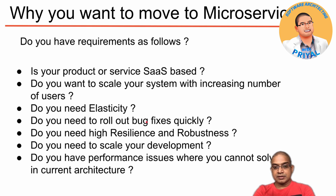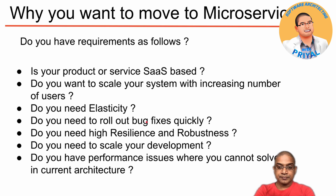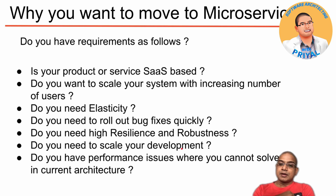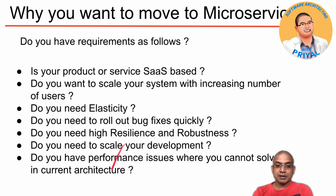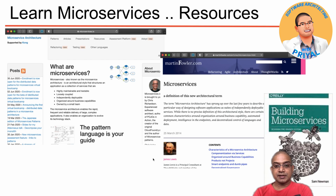Is your product SaaS-based, or is the number of users increasing day by day? Do you need a lot of elasticity? Do you need to scale your system? Do you need to implement CI/CD pipelines — continuous integration, continuous deployment? Or do you need to have daily builds going to production with quick production deployments? There are a lot of things you have to have in order to implement a microservices architecture. If you want to learn about it, there are a lot of resources available.